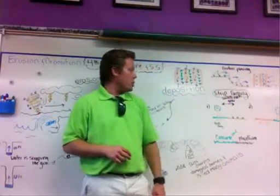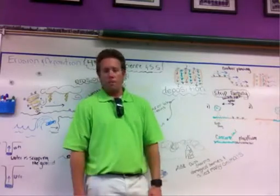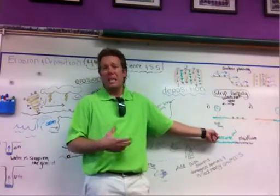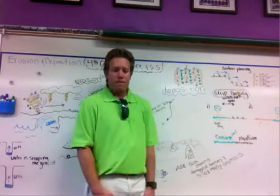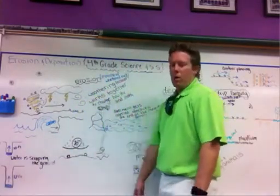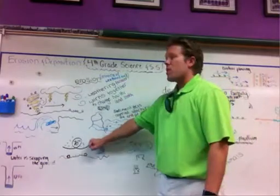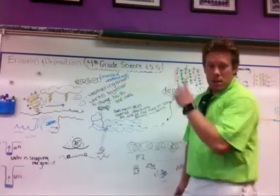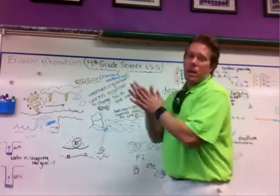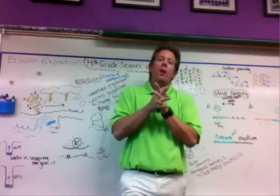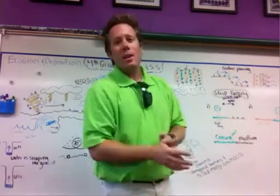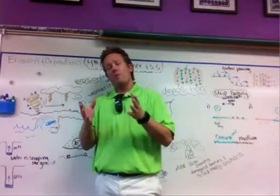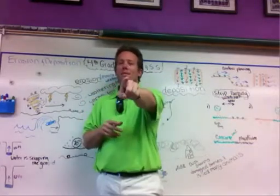These different methods — contour plowing and strip farming — are called conserving the soil. Conserving just means to save it; you don't want to waste it. We've talked about flowing water, erosion, strip farming, and how the strength of the wind determines how quickly something gets eroded, and we've talked about the Dust Bowl. If you have any questions, you can contact me on Edmodo, Facebook, or by clicking the contact button on my classroom website.